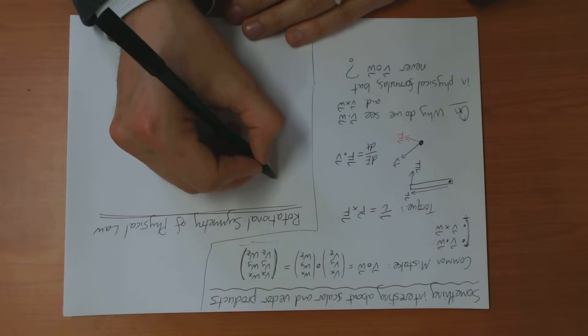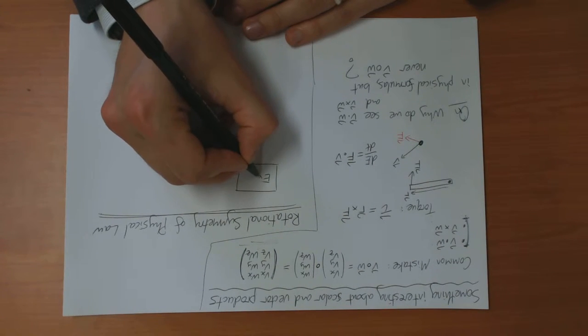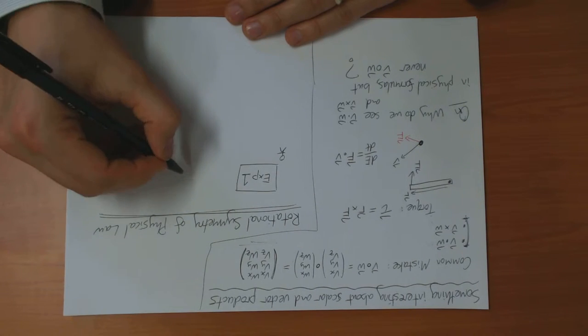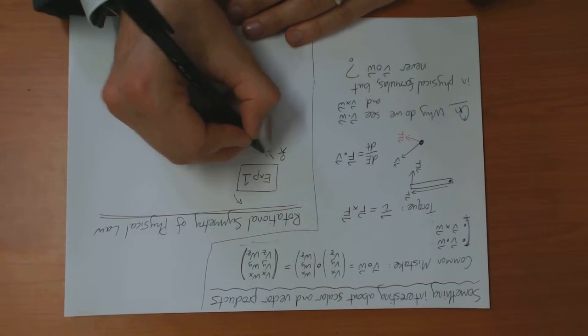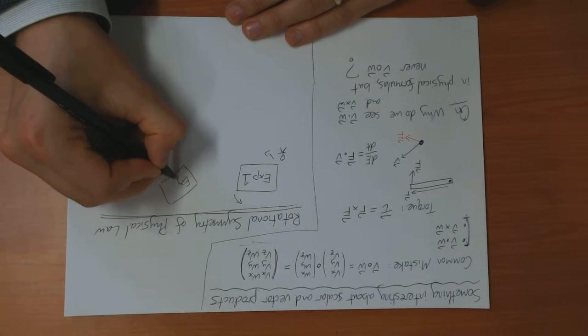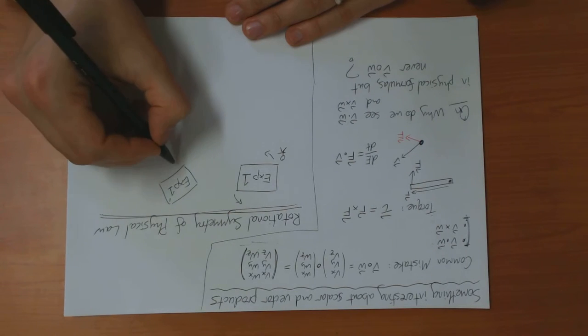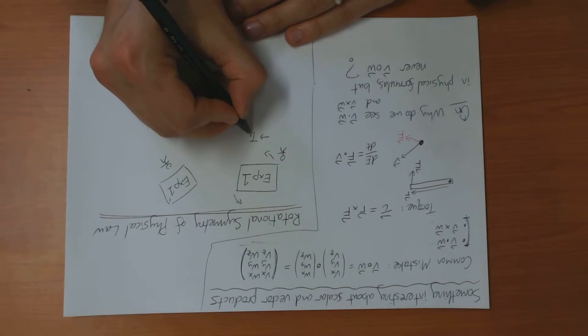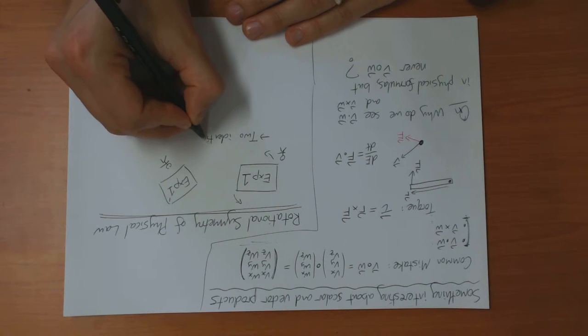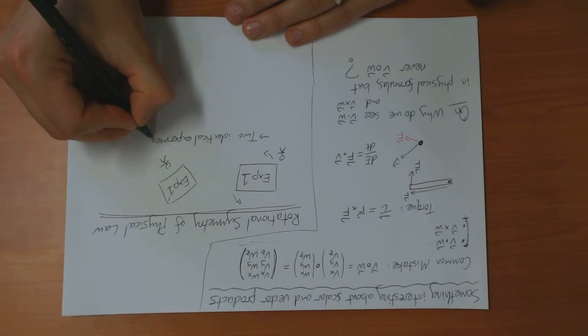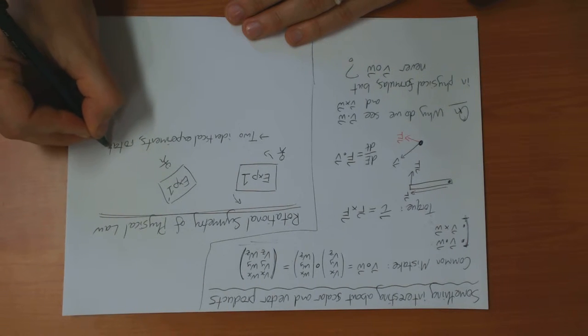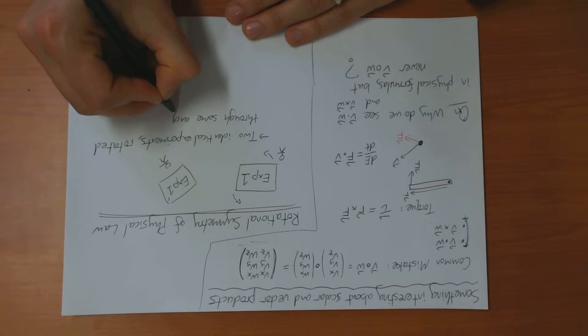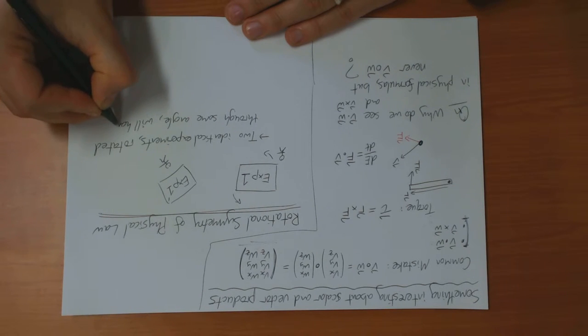What this means is, suppose that I've got some experiment, experiment number one, and I get some certain result. It says that if you do the same experiment again, but rotate it, experiment number one prime, rotate the experiment, then the results will be the same. So two identical experiments where they are rotated through some angle will have identical results.